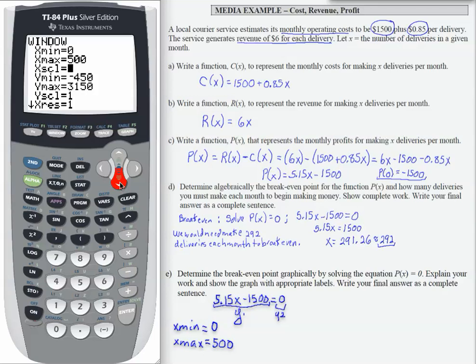I'm going to skip over x scale, leave it at 1, and go down to y min and y max. Y min is my smallest output that I'm concerned with, and in this case, we kind of already found out that when the input is 0, the output is negative 1,500. So I'm going to make my y min less than negative 1,500 to be sure that I can see where this graph crosses the y-axis.